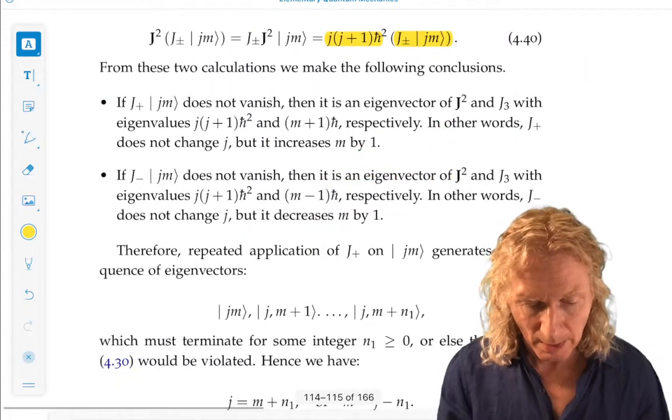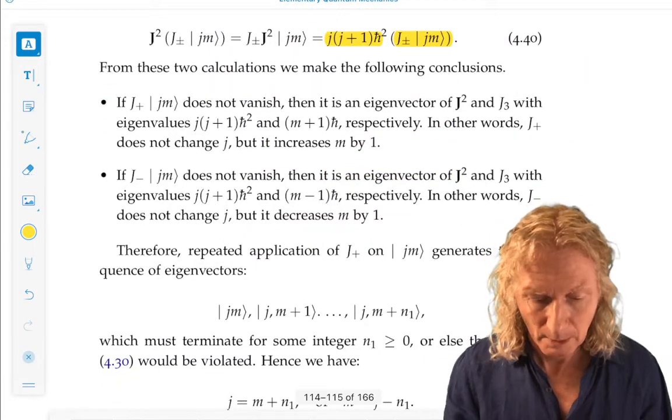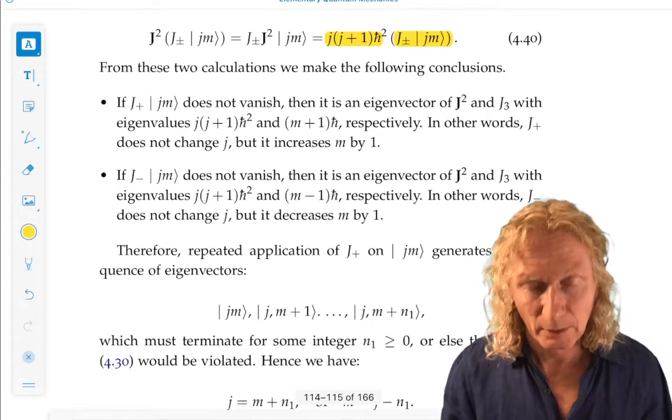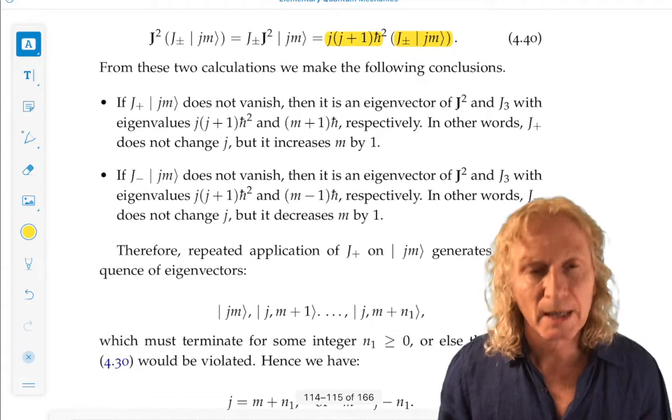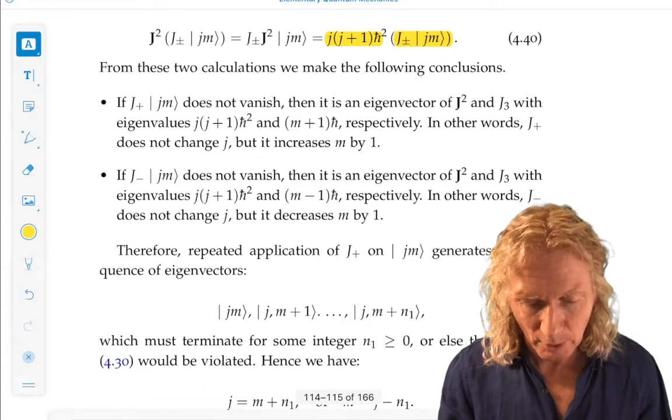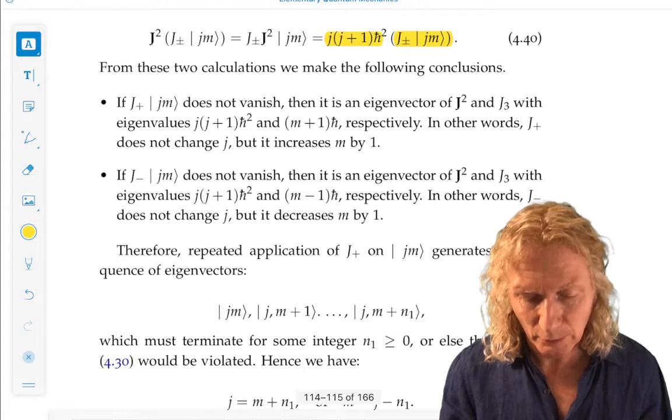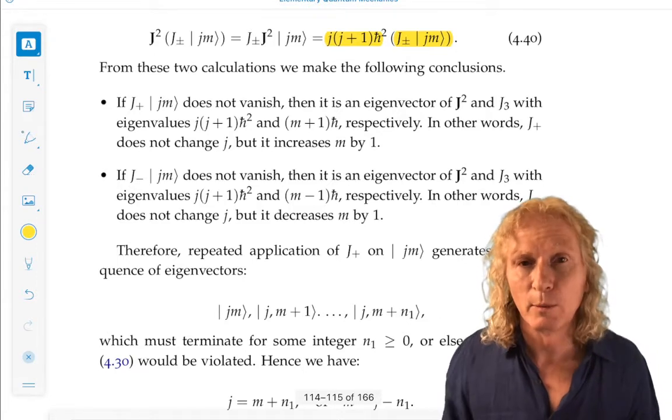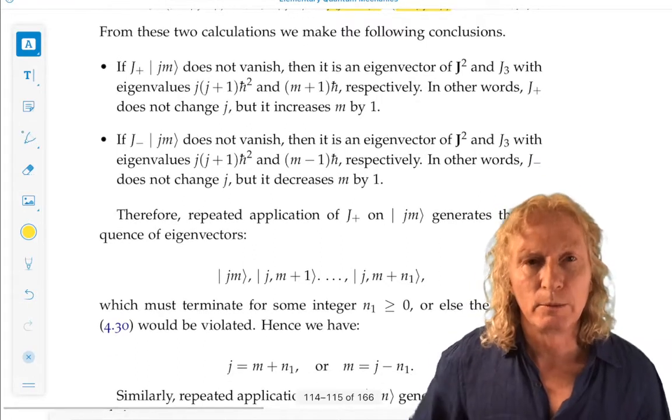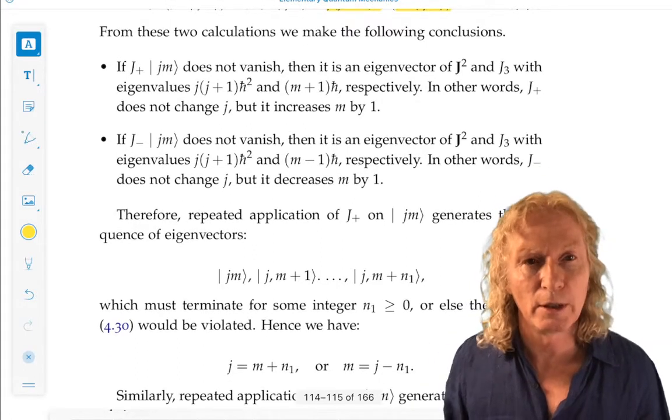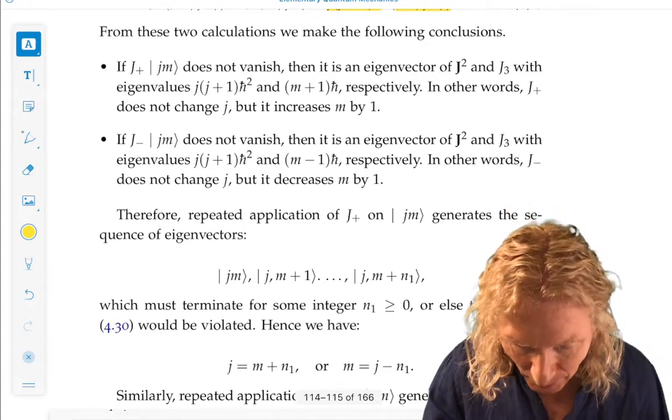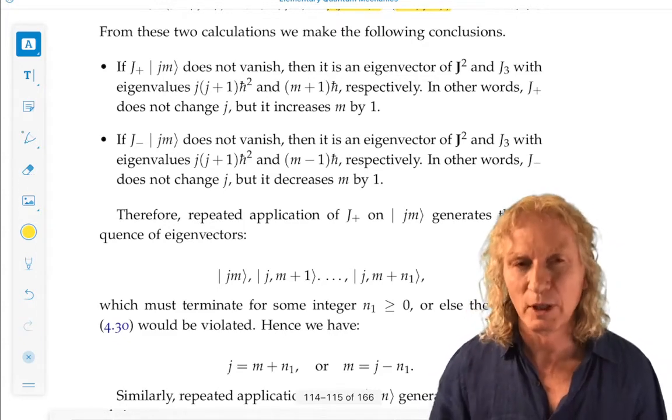If we summarize J plus acting on ket J, M, if it doesn't vanish, then it's an eigenvector of J squared and J3 with eigenvalues J times J plus 1, H bar squared, and M plus 1, H bar, respectively. The important point is J plus does not change J, but it increases M by 1.